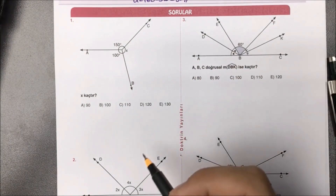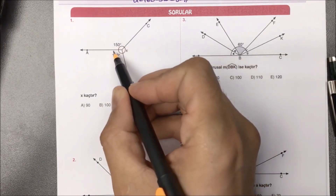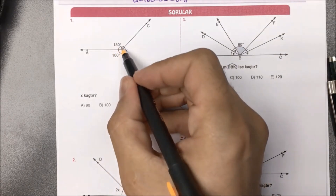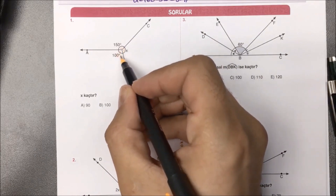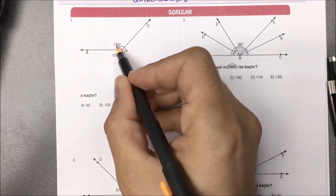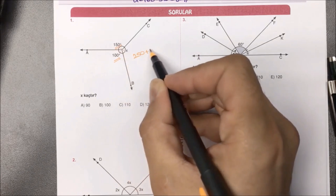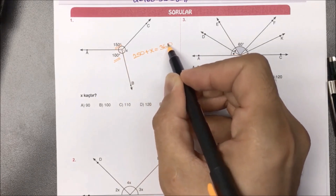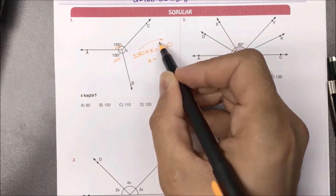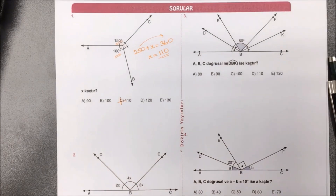Birinci örneğimiz tam açı. Tam açı dediğimiz, bir noktanın etrafında az önce bir doğru vardı ve toplamı 180'di. Bundan iki tane varsa yani tamamı 360 derece yapacak. Burada üç tane açı bir tam açı yapmış; hepsinin toplamı 360 derece olacak. Dolayısıyla 150 ile 100'ü toplayacak olursak 250 yapar. 250 artı X eşittir 360 derece. 360'dan 250'yi çıkardığımızda aradığımız yanıt 110 derece olarak bulunmuş olur.